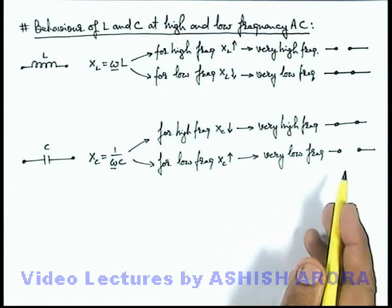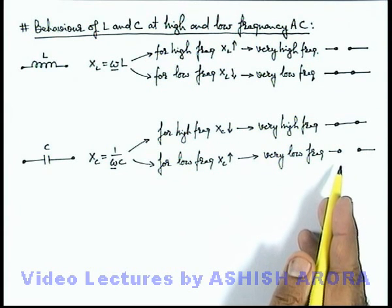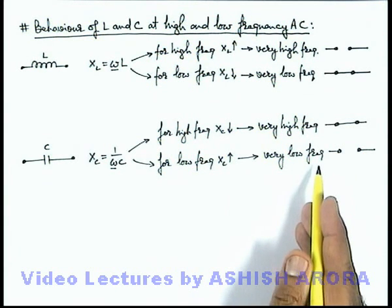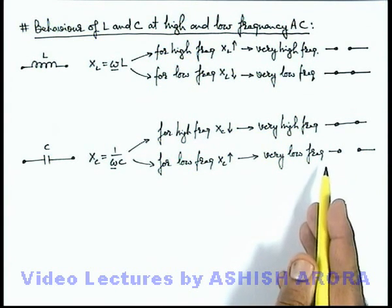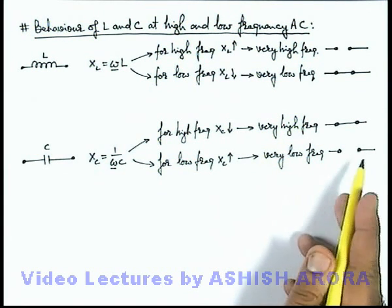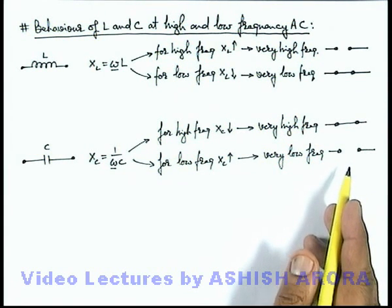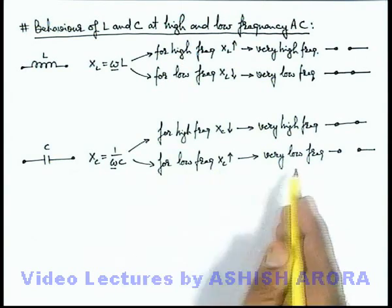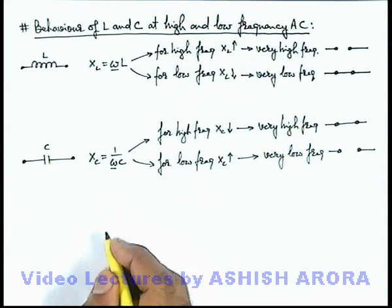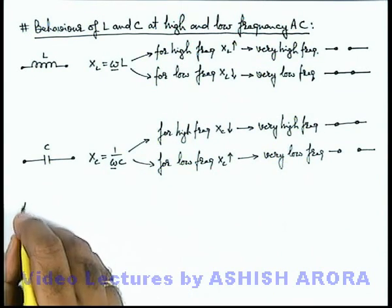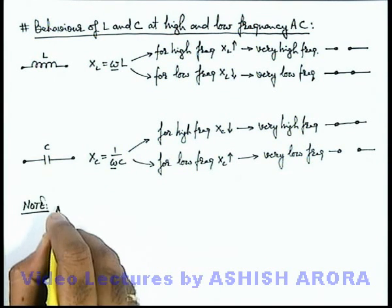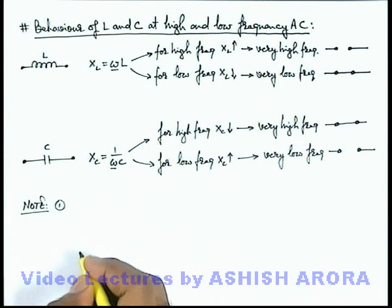For low frequency — that is, almost for DC circuits or at very low frequency variation in current — if omega is negligible, X-C will be excessively high and the capacitor behaves like almost an open circuit, which we have studied in DC circuits where the frequency is zero, there is no variation, and the capacitor behaves like an open circuit in steady state. So you must be very careful about both those situations. Here we can write two important notes.